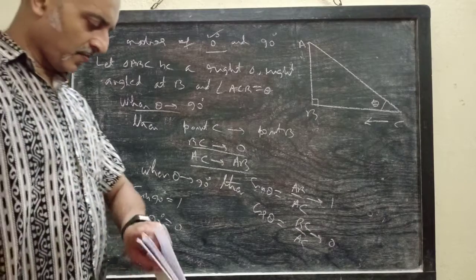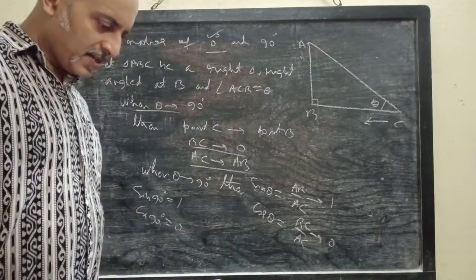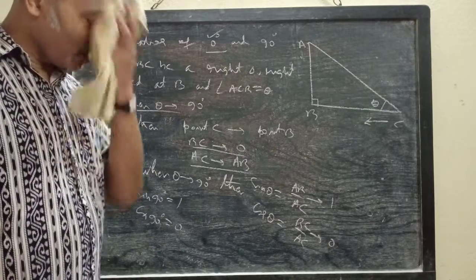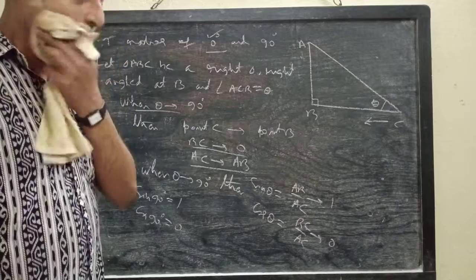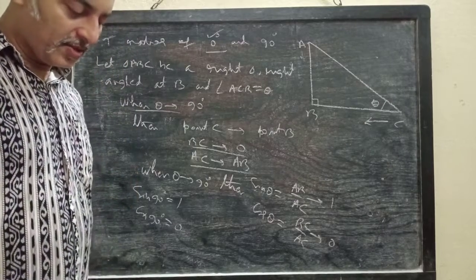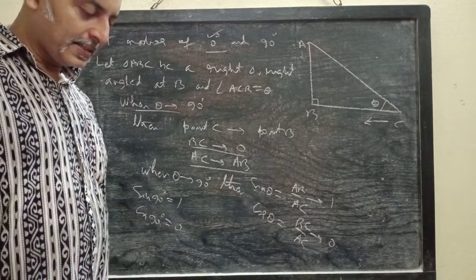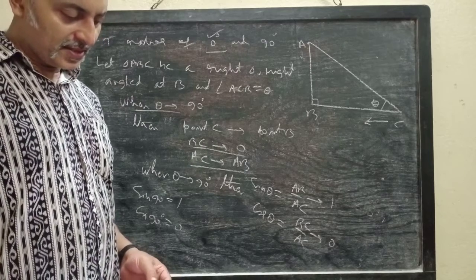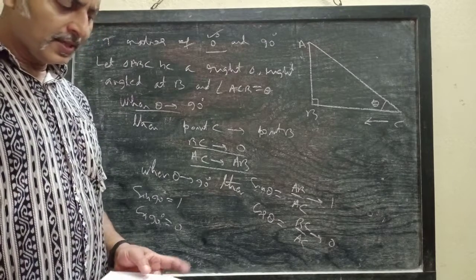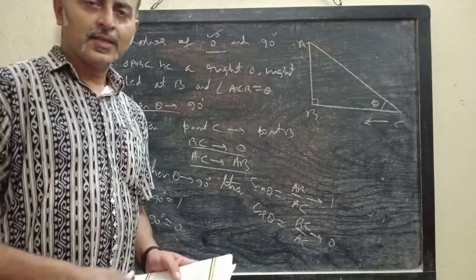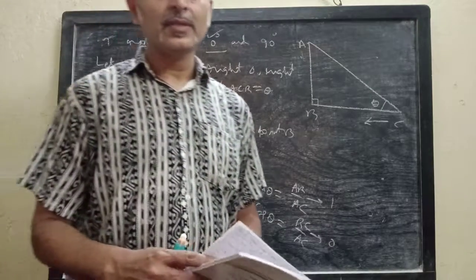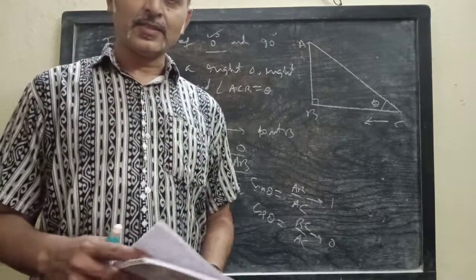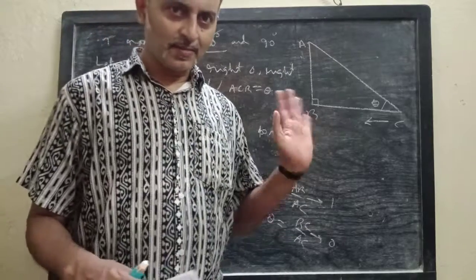We have now derived geometrically all the values of trigonometric ratios of the 5 standard angles: 0°, 30°, 45°, 60°, and 90°. In our next class, we will solve problems based on these standard ratios. Goodbye and thank you.